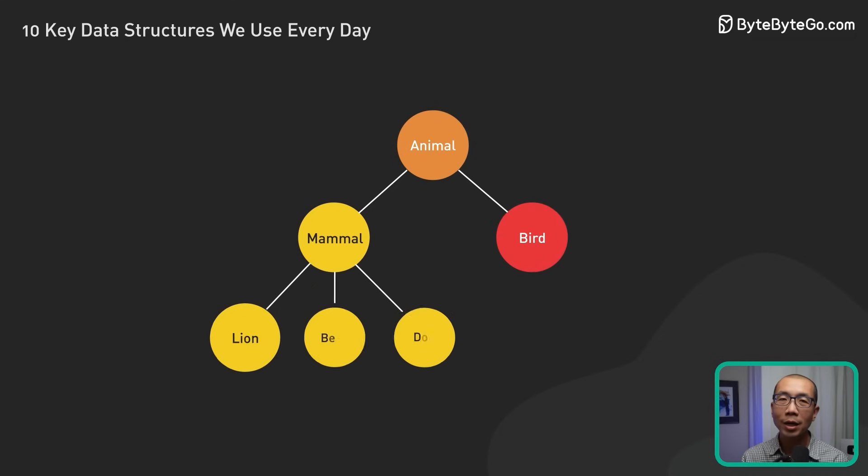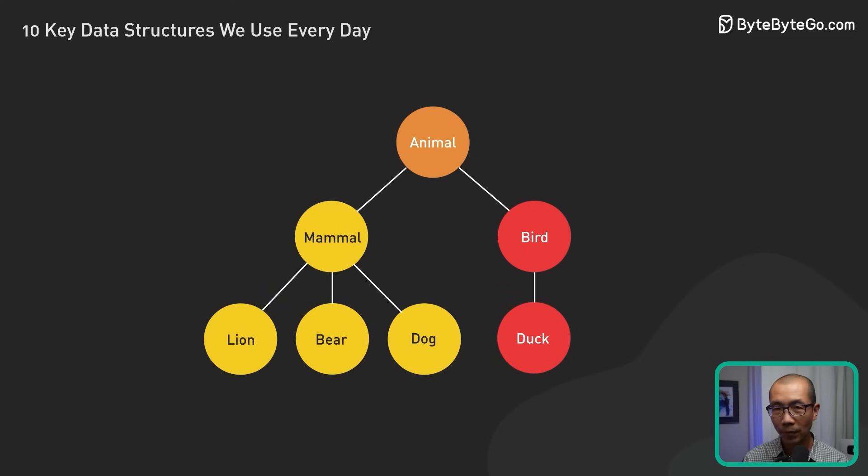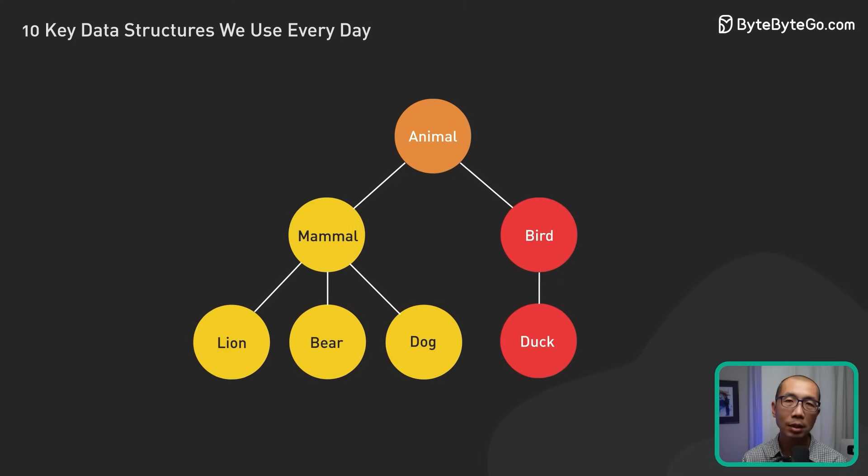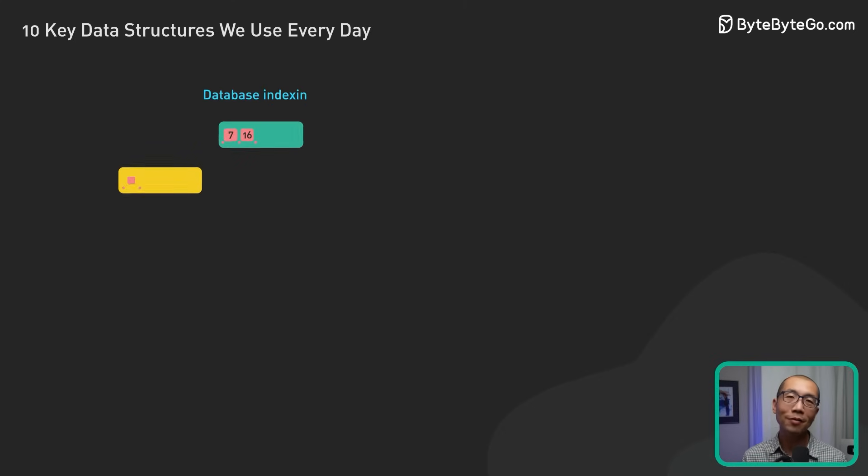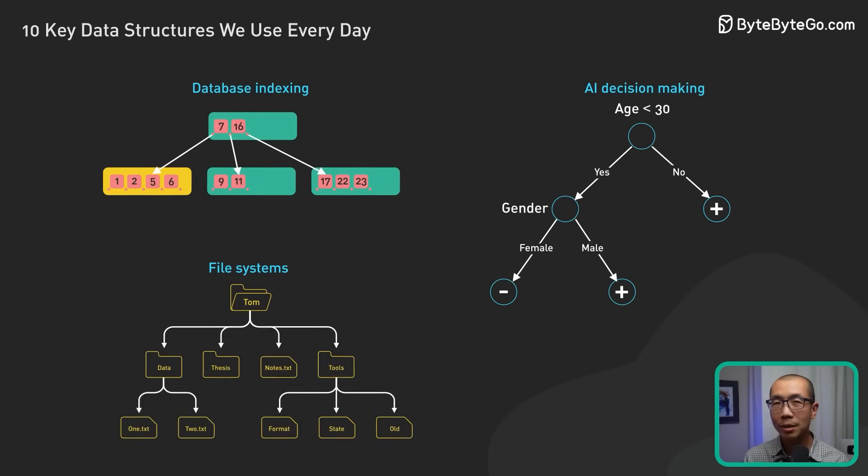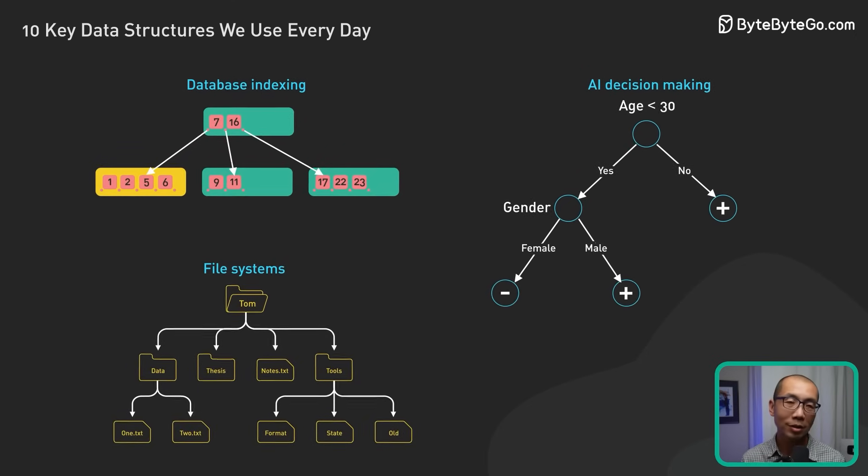Trees organize data hierarchically. They are useful for representing data with natural hierarchies, values, or relationships. They can be used in various applications like database indexing, AI decision-making, or file systems.